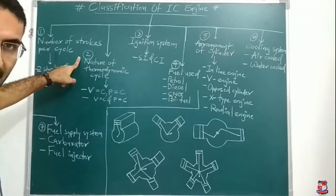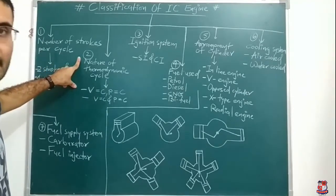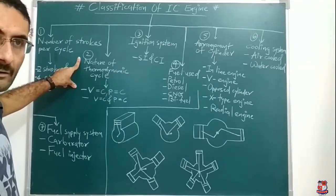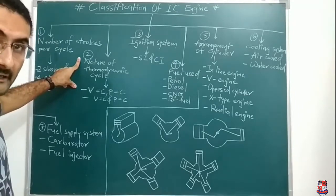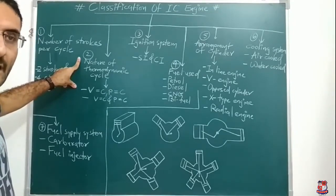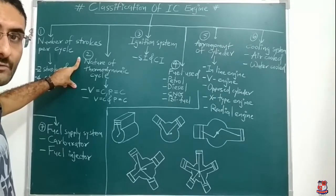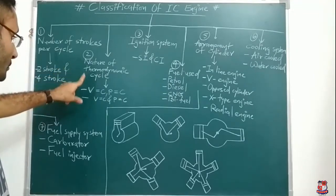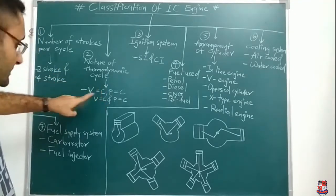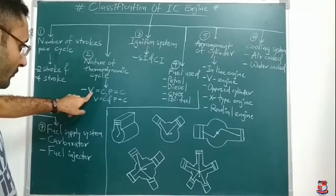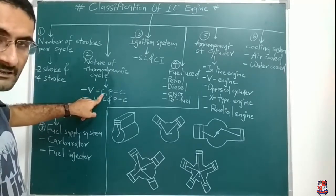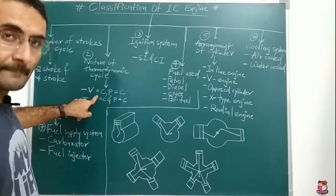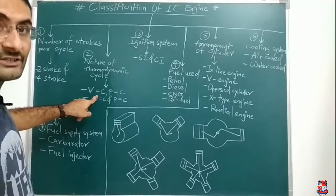The second classification of IC engine is based on the nature of the thermodynamic cycle. In my previous videos, I discussed the PV diagram for petrol engine and diesel engine. In a petrol engine, heat is added at a constant volume process. In a diesel engine, heat is added at a constant pressure process. There are 3 classifications here. First is constant volume — 'CC' stands for constant, 'V' for volume — that is the constant volume cycle, which is your petrol engine. The another name of petrol engine is also auto engine.